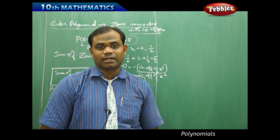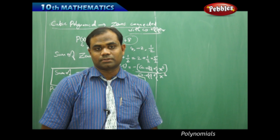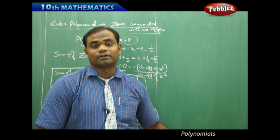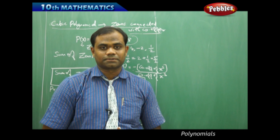This is how we relate the sum of zeros and the product of zeros with their respective formulas, and understand cubic polynomials connected with their respective coefficients.